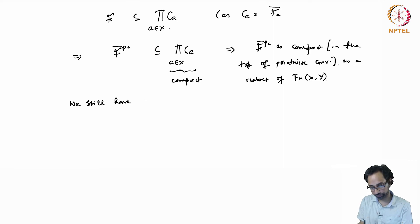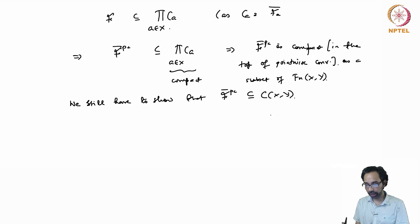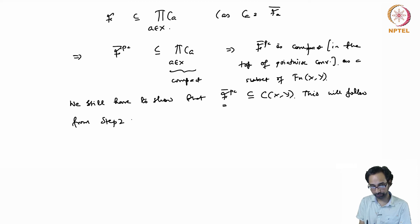We still have to show that F_closure_pc is in fact a compact subset of C(X,Y). We have shown compactness as a subset of all functions from X to Y, but our claim is compactness in the subspace of continuous functions. We need to show that this closure lies within C(X,Y), and this will follow from step two, which shows F_closure_pc is equicontinuous — since each function in an equicontinuous set is automatically continuous.